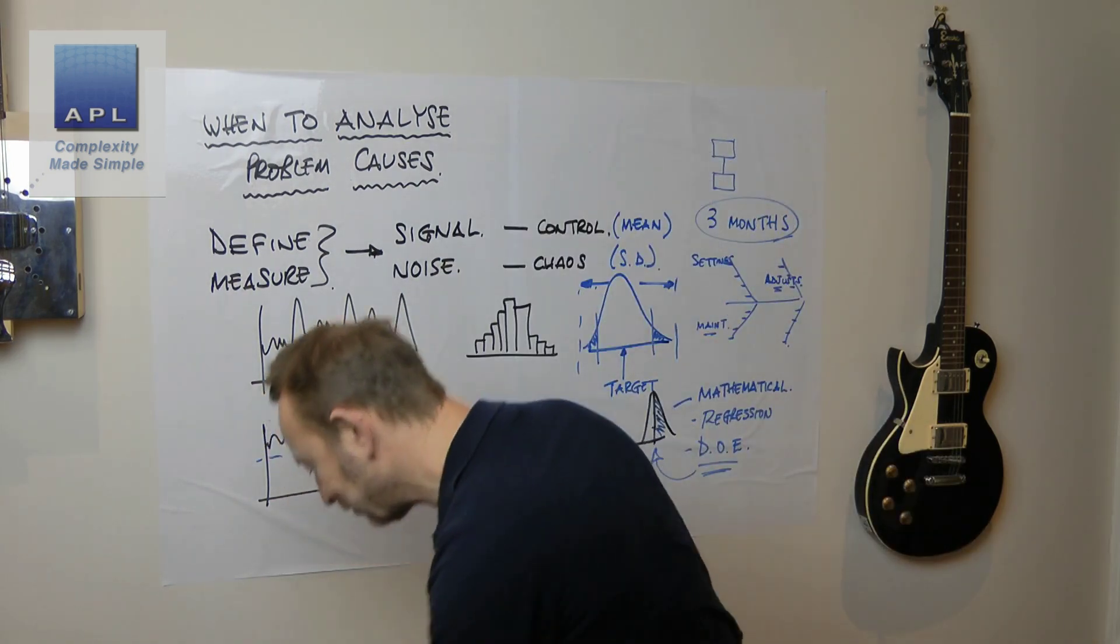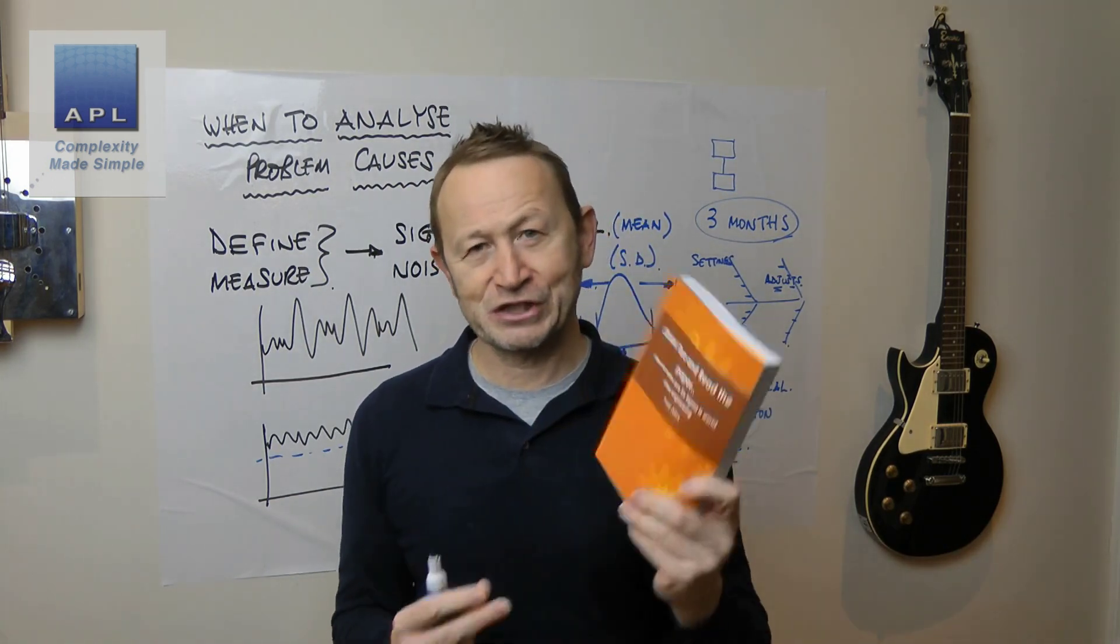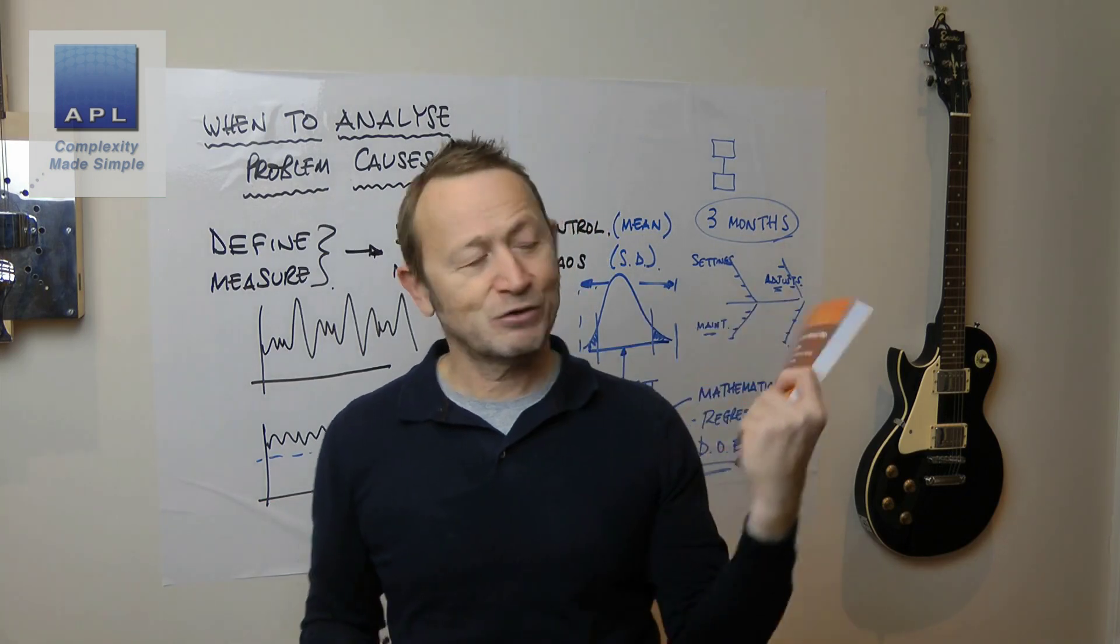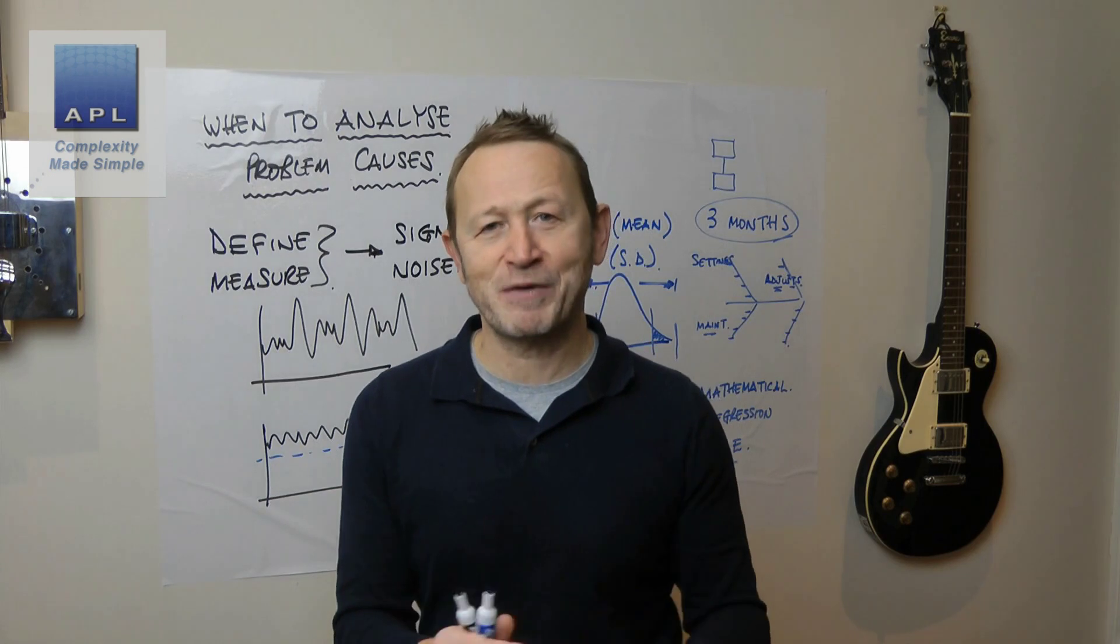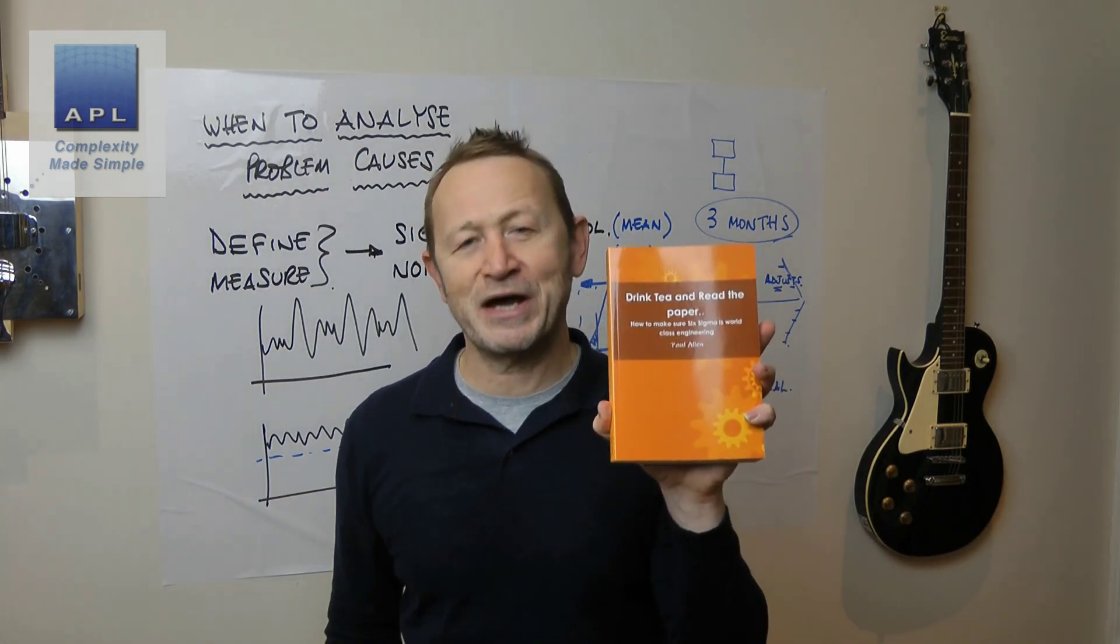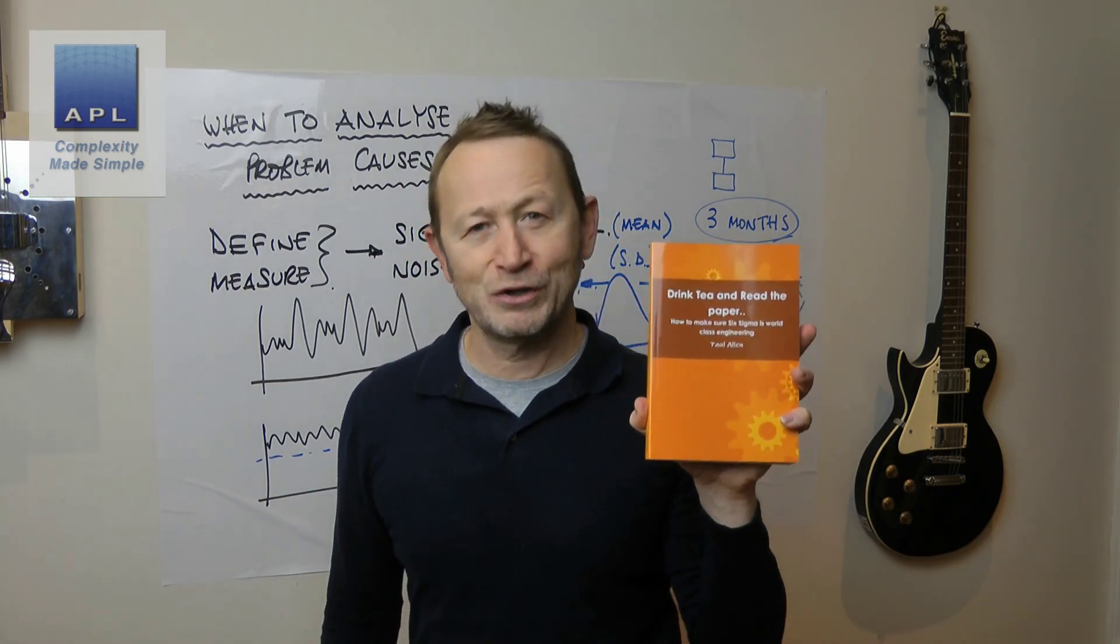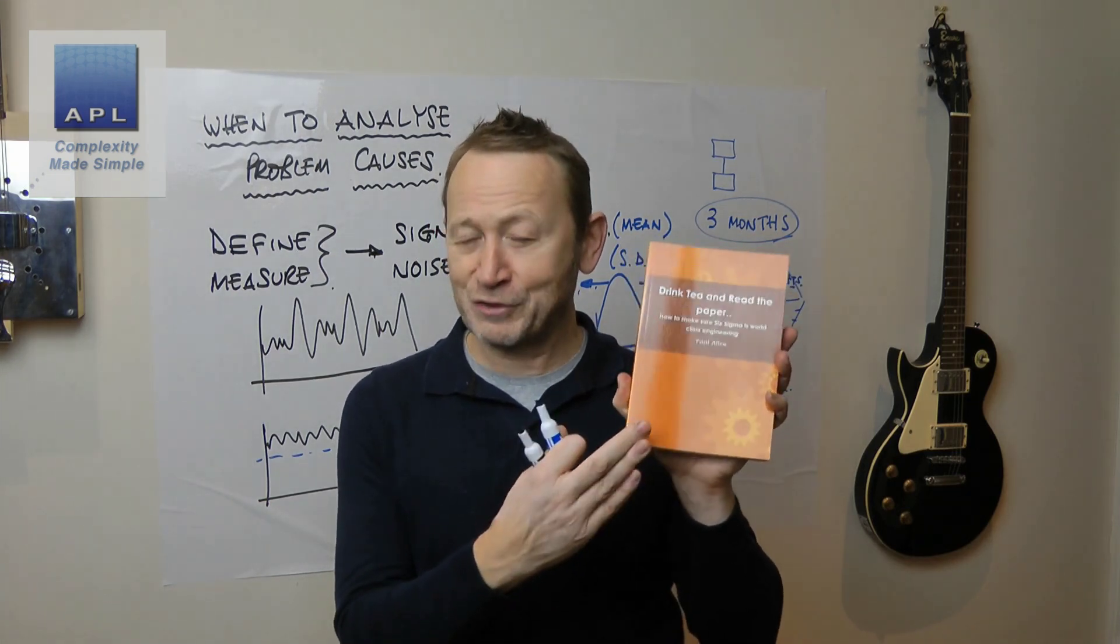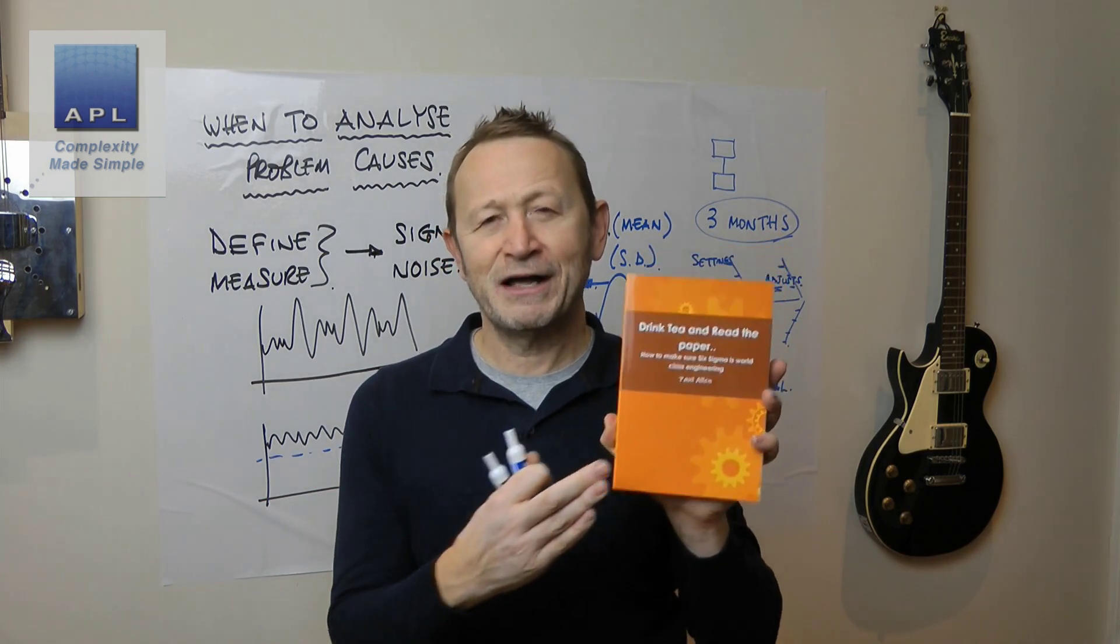Now, if you want to know more about this, you can buy my book. This is all about Six Sigma. Define measure, analyze, improve and control. It tells you all about cause and effect analysis, run chart, histogram, CPK, design of experiments. It's all in drink tea and read the paper. You can get this on Amazon. I believe you can get it on lulu.com as well. So if you want to know more, please buy my book. There is also an electronic copy on lulu.com.